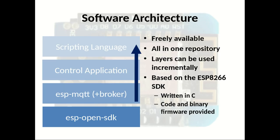Now let's look at the software architecture of the micro MQTT broker. It consists of three layers of software that can all be used incrementally - meaning you don't need to use the upper layer if it doesn't fit your application. It is freely available and packed into one repository on GitHub. The layers are: the MQTT broker itself, the control application on top, and finally a scripting language for connecting sensors and actors. It's all based on the ESP8266 SDK, written in C, with both code and binary firmware provided.